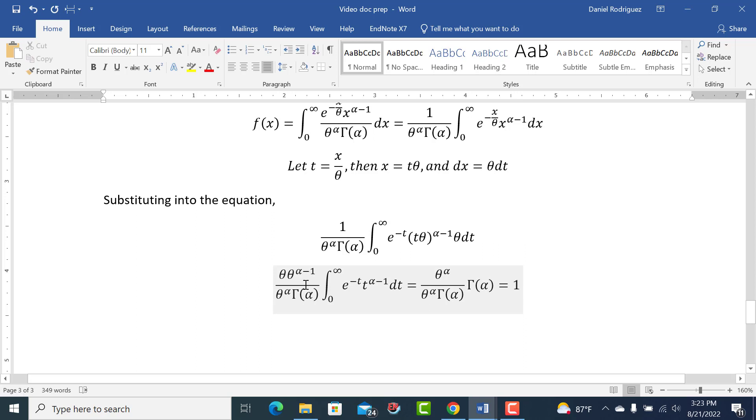So pull the theta alpha minus one out of here. So we're also pulling this theta out, so we have theta times theta alpha minus one, and the denominator stays as it is. Now, since we're multiplying these two, that means we're adding their exponents, so we have alpha plus one, and this is theta raised to the first power, so it's alpha minus one plus one equals alpha, so the ones cancel out.